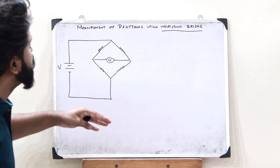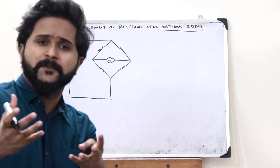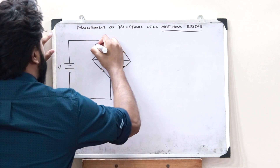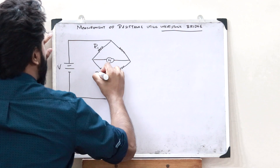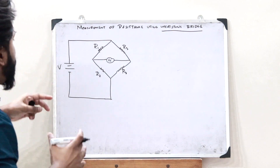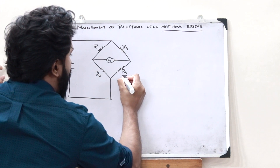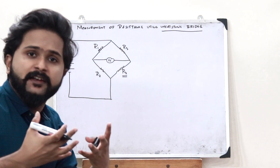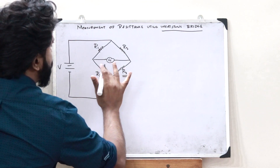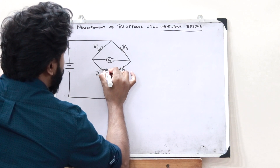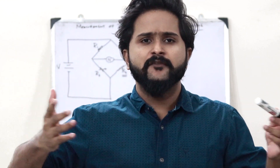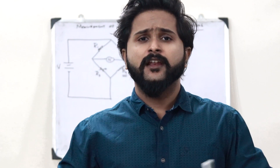How do we use this Wheatstone's bridge to calculate the value of an unknown resistance? It is very simple. We have 4 resistances: R1, R2, R3, and R4. Let us imagine that R4 is the unknown resistance — that is, we have to find the value of R4. For that, R2 is replaced by a variable resistor, which is a resistor whose value of resistance can be changed, like a rheostat.